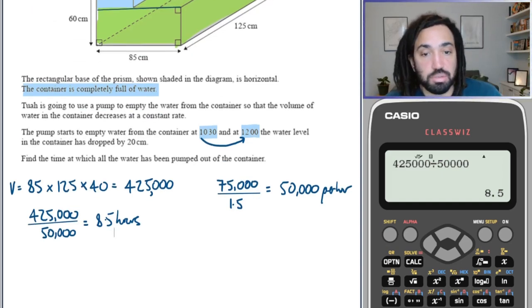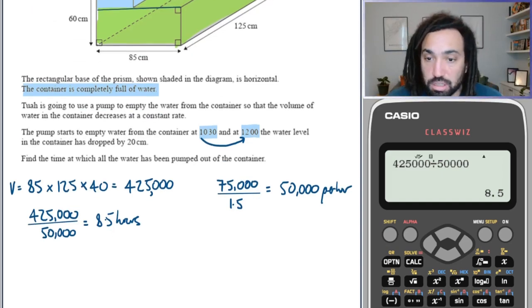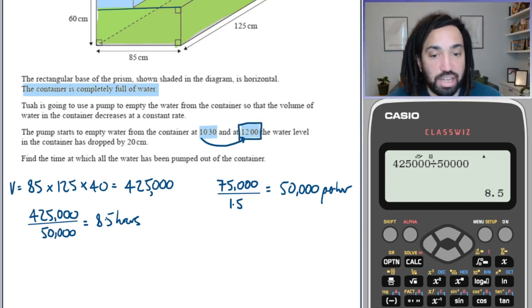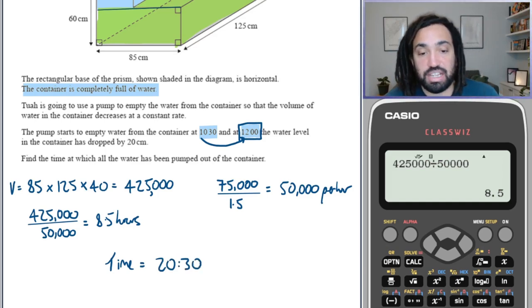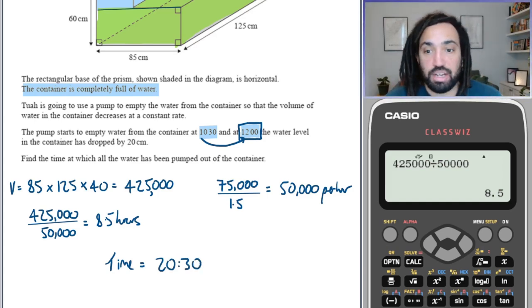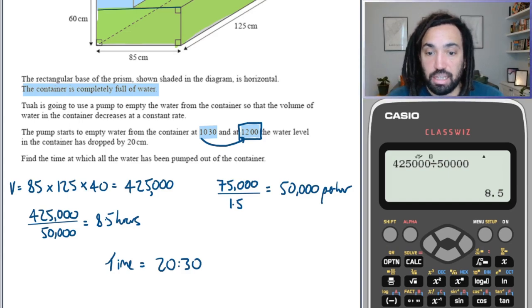So at the moment we are at 12 o'clock midday, and we need another 8.5 hours. So therefore the time will be 8 o'clock in the evening, or 8.30, sorry, because you have to add 8.5 hours onto midday. So just on a 24-hour clock, that's 20.30. Perfect.